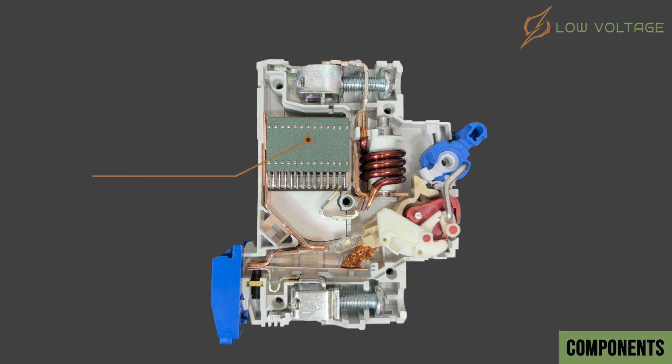When the MCB trips to disconnect the circuit, or in cases where the MCB is switched off on operating load, a high-temperature arc is generated between the moving and fixed contacts. This arc is controlled by the arc chamber, which consists of metal pieces arranged in parallel to split the arc into smaller segments, reducing its intensity and protecting the internal components of the MCB from damage.